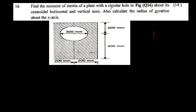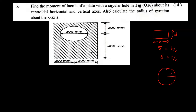We have a rectangle with sides B and D. For the rectangle, x-bar equals B/2 and y-bar equals D/2. For the circle, if we have radius r, then x-bar equals r and y-bar equals r. These are the centroid equations.